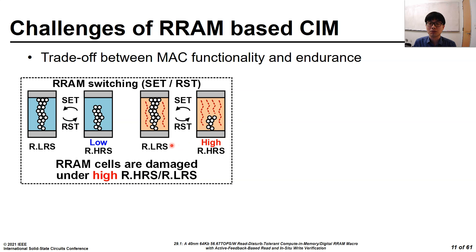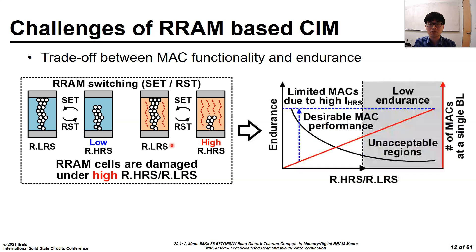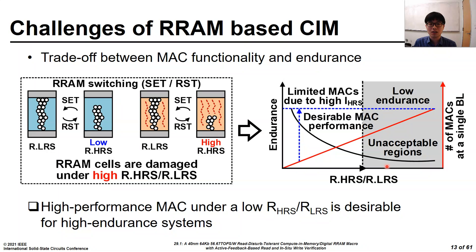Thus, in the case of a high on-off ratio to obtain superior MAC functionality, the RRAM has inferior endurance. Since RRAM suffers from an inherently low endurance, it limits the lifespan of the system employing RRAM. Concerning the trade-off, an RRAM with a high on-off ratio exacerbates the lifespan of the system. Thus, high-performance MAC under a low on-off ratio is desirable to implement high-endurance, high-performance RRAM-based systems.